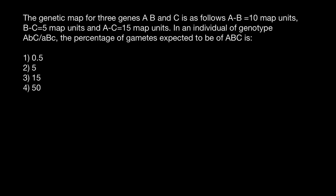Hello and welcome to Nikolai's genetics lessons. Today's problem comes from one of my subscribers. The genetic map for three genes a, b, and c is as follows: a-b is 10 map units, b-c is 5 map units, and a-c is 15 map units. Given an individual of a specific genotype, what percentage of gametes are expected to be dominant for all three alleles? You have to choose the correct answer.